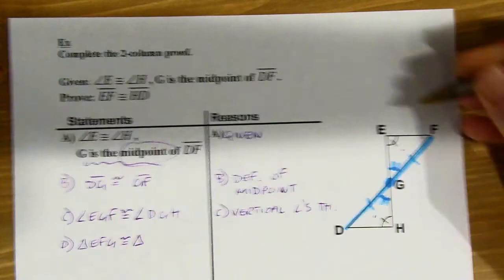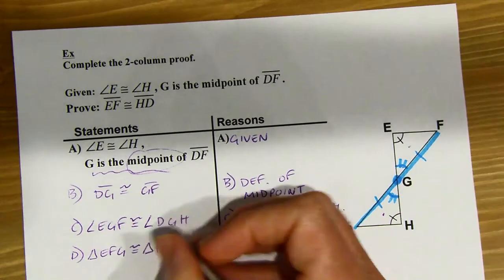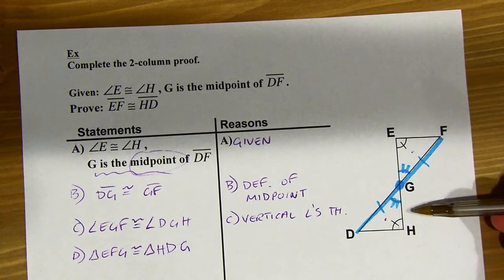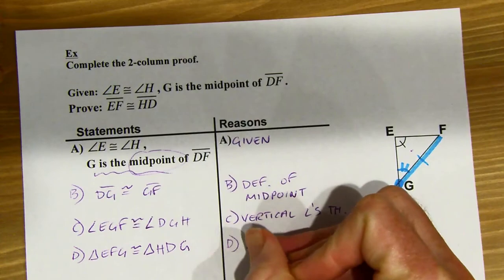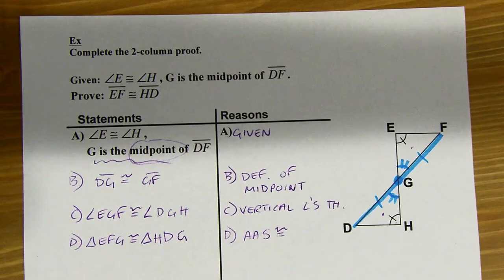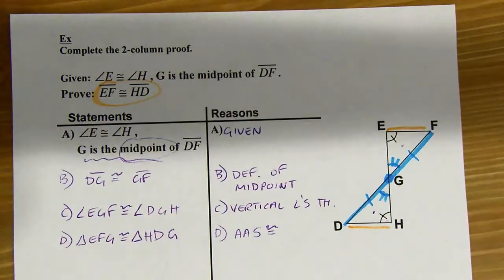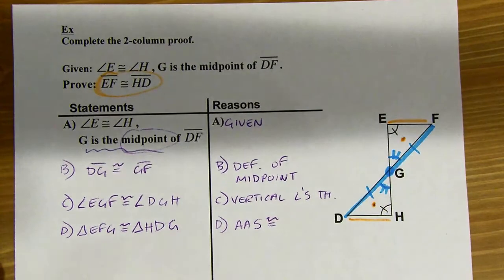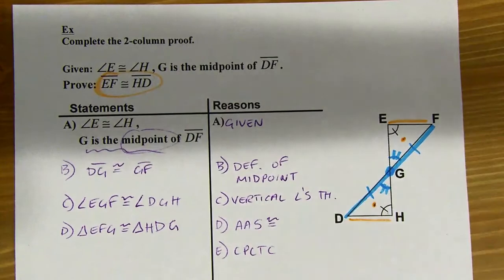Now looking at the triangles, I do know the triangles are congruent. In a lot of proofs we've done, that's what we're trying to prove — but here we're trying to prove something about the triangles. First, I have to say the two triangles themselves are congruent. I'll call the top one triangle EFG and match E with H, so triangle EFG is congruent to triangle HDF. With two angles and a non-included side, that's the AAS — angle-angle-side — triangle congruency theorem.